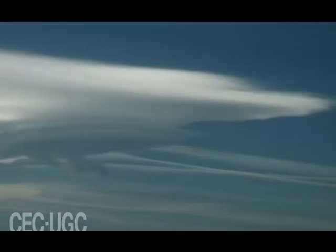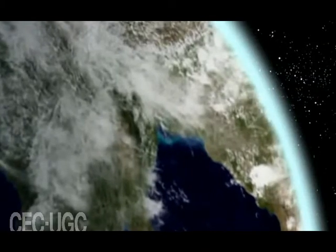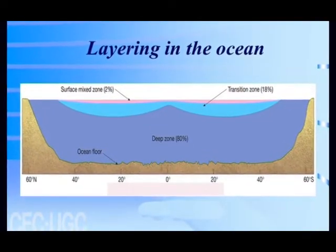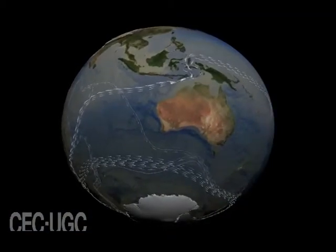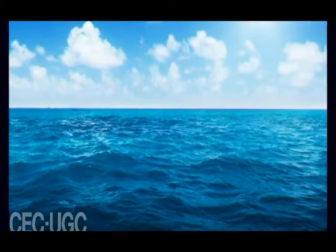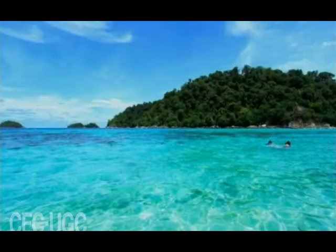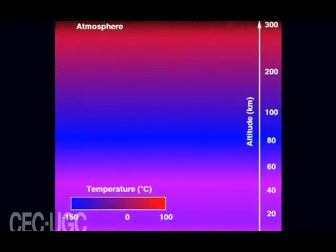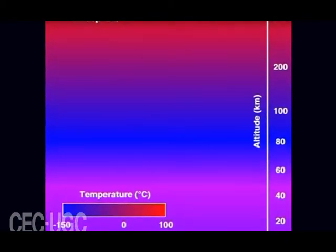The envelope of gas surrounding the earth changes from the ground up. Four distinct layers have been identified using thermal characteristics, chemical composition, movement and density. Each of the layers is bounded by pauses where the greatest changes in thermal characteristics, chemical composition, movement and density occur. The temperature of the air is caused by the combination of air, water and land working together. These three factors heat and cool areas at different rates. Temperature also varies by the time of day, the season or even the year.